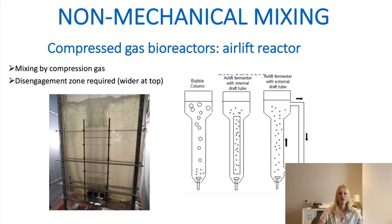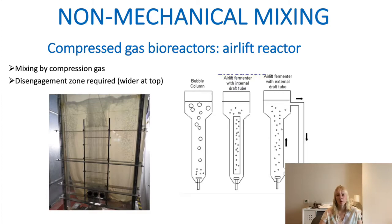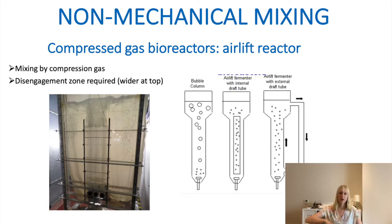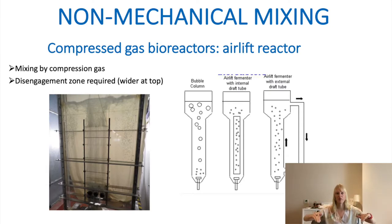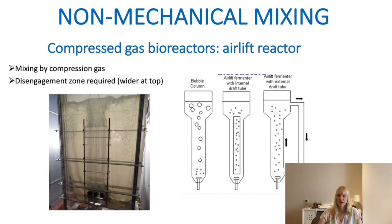Those previous examples both relied on mechanical mixing, which has the drawbacks of generating heat and causing shear stress. The airlift reactor uses non-mechanical mixing instead. A compressed gas is introduced into a particular tube, and because the gas velocity going upward is higher than the surrounding liquid, this velocity difference drives distribution throughout the liquid and mixing takes place.